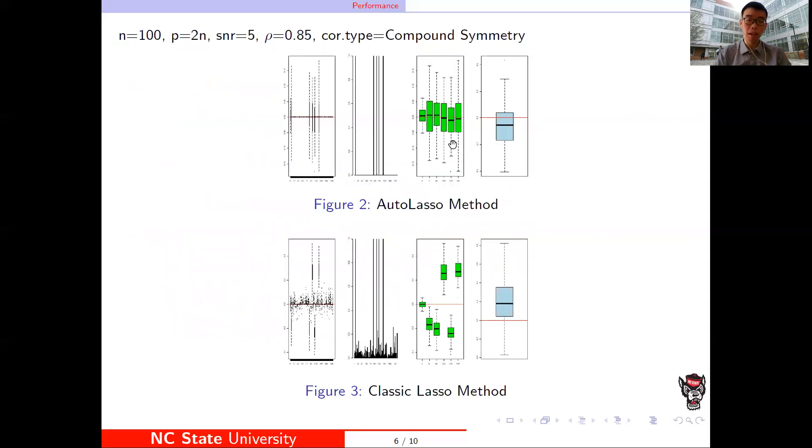For this part, we set N is 100, P is 2N, SNR is 5, correlation is 0.85, and the correlation type is compound symmetry. The first part is bias of the beta coefficient. You can see the AutoLasso method has less bias than the classical Lasso method.